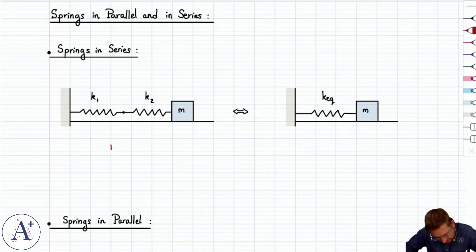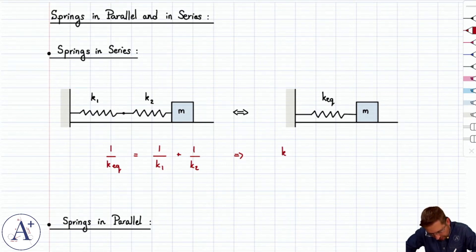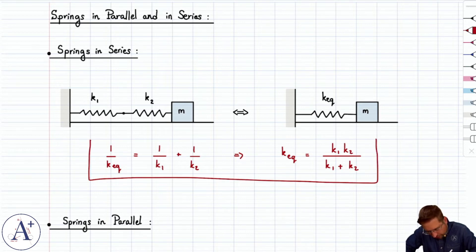Now when two springs are in series, we find k-equivalent by writing 1 over k-equivalent is 1 over k1 plus 1 over k2, and if there were more springs plus 1 over k3 and so forth. And if you did the math and arranged these fractions to have a common denominator, you would see that k-equivalent equals k1 k2 divided by k1 plus k2.